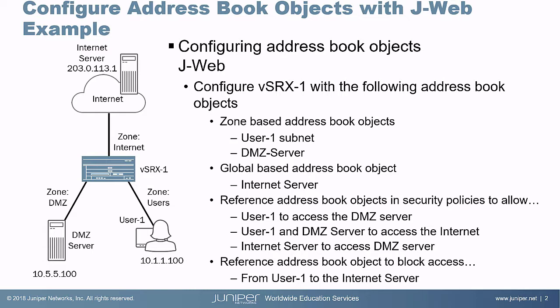Let's look at the criteria for the example. We need to configure VSRX1 using JWeb with the following criteria: create zone-based address book objects for user1's subnet and the DMZ server, and create a global-based address book object for the internet server. We then want user1 to access the DMZ server, user1 and the DMZ server to access the internet, and the internet server to access the DMZ server. We do not want user1 to be able to access the internet server.